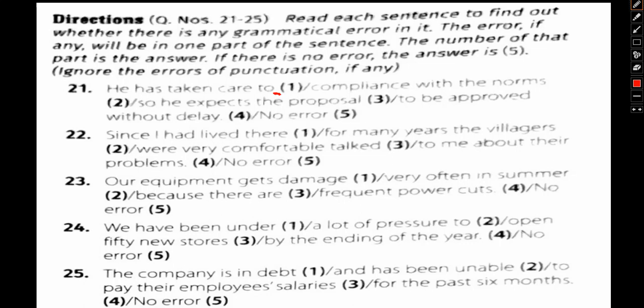Compliance with the norms. Here we can see the usage of the verb compliance is wrong. It will be comply with the norms. Therefore option 2 is an error part. Because there will be only one error, option 2 is the error.